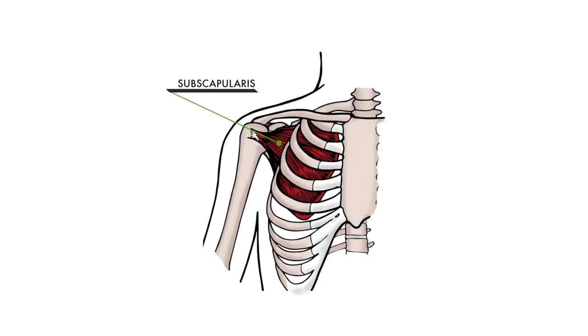The final muscle of the rotator cuff is the subscapularis. We will also be working the serratus anterior during this time. You can see the subscapularis is connected to the shoulder blade, but between the ribs and shoulder blade, making it difficult to access.